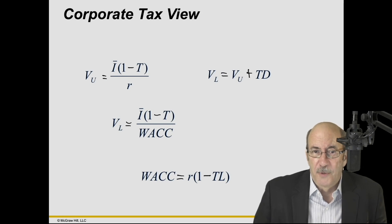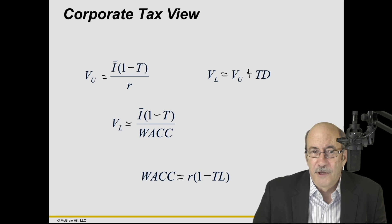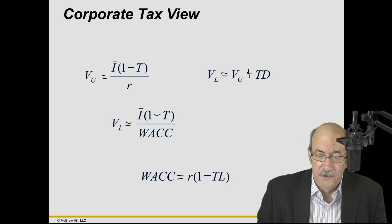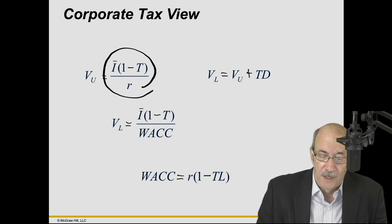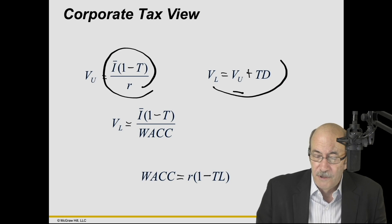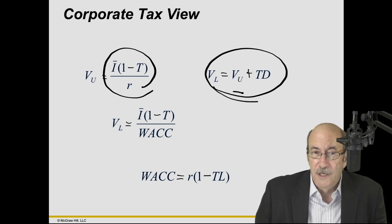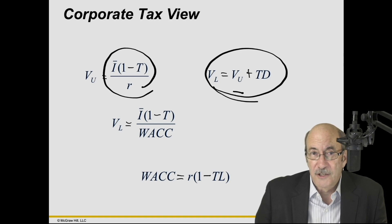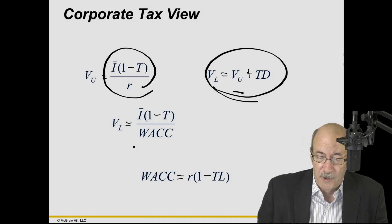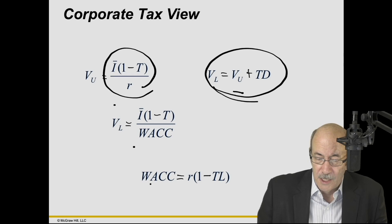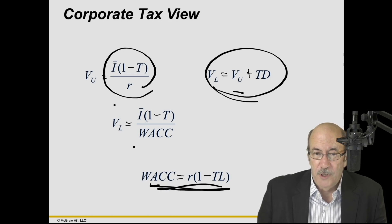Here's a summary of the formulas: the value of the unlevered firm is cash flows on an after-tax basis divided by the cost of equity. The value of the levered firm is the value of the unlevered firm plus the debt tax shield (T times D). And the weighted average cost of capital can be written as the unlevered cost of equity times (1 minus T times the leverage ratio).